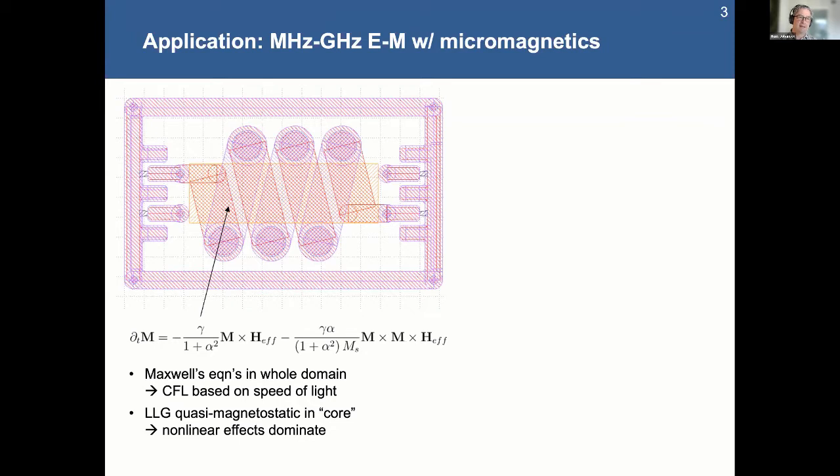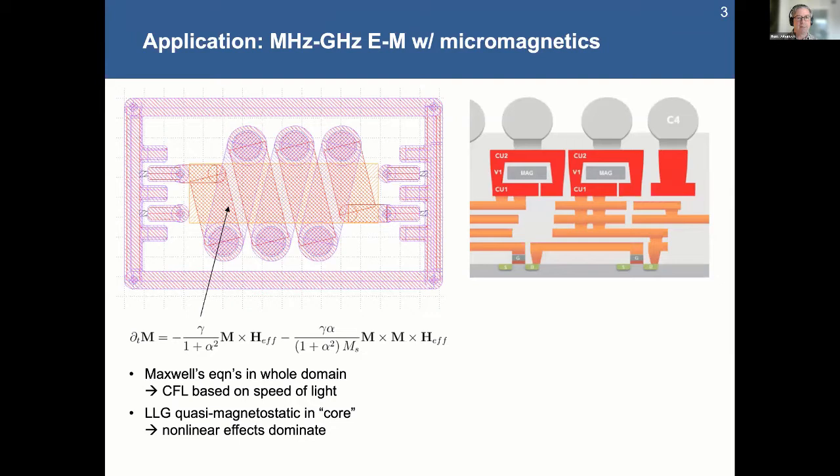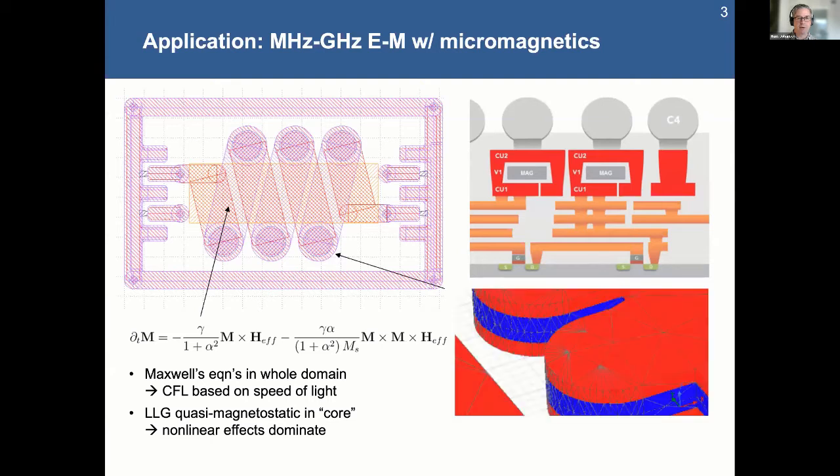So these are the LLG equations. They're for micromagnetic effects associated with spin torque and things like that. And they actually, in this particular design, use this effect in order to shape and manage the resonance of the signal that's going through this particular device.